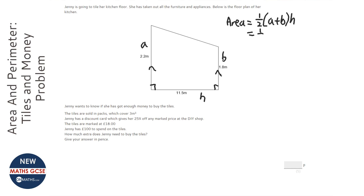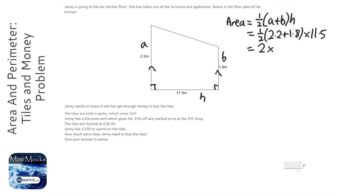So it's going to be half 2.2 plus 1.8 times 11.5. So 2.2 plus 1.8 is 4, and half of 4 is 2. 2 times 11 is 22, so that's going to be 23. So that's 23 metres squared.